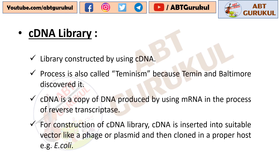Now let's see the second type of gene library, that is the cDNA library. The library constructed by using cDNA is called a cDNA library. This process is also called Teminism, because Temin and Baltimore discovered it. cDNA is a copy of DNA produced by using mRNA in the process of reverse transcription. The enzyme reverse transcriptase helps in this process. For construction of a cDNA library, cDNA is inserted into a suitable vector like a phage or plasmid and then cloned in a proper host, E. coli.